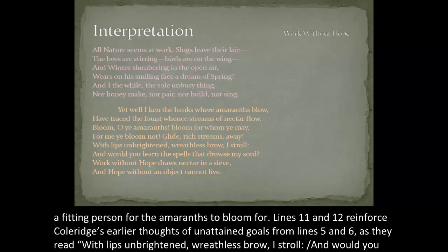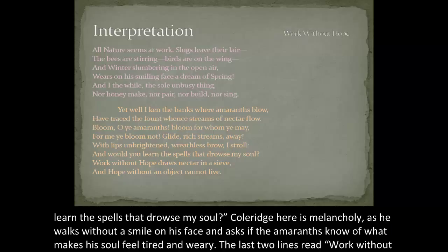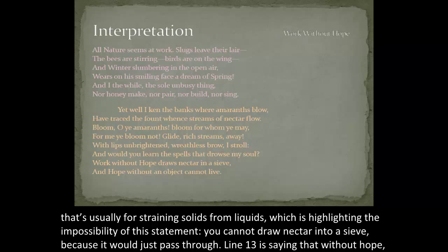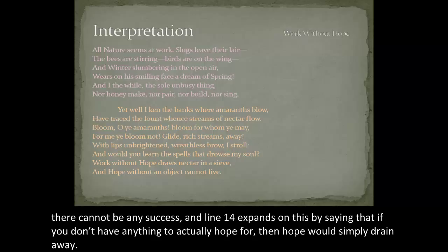Lines eleven and twelve reinforce Coleridge's earlier thoughts of unattained goals from lines five and six, as they read: 'With lips unbrightened, wreathless brow I stroll, and would you learn the spells that drowse my soul?' Coleridge is melancholy, walking without a smile and asking if the amaranths know what makes his soul feel tired and weary. The last two lines state that to do your work while hopeless is like trying to gather nectar in a sieve — impossible, because it would just pass through. Without hope there cannot be any success, and if you don't have anything to actually hope for, hope would simply drain away.